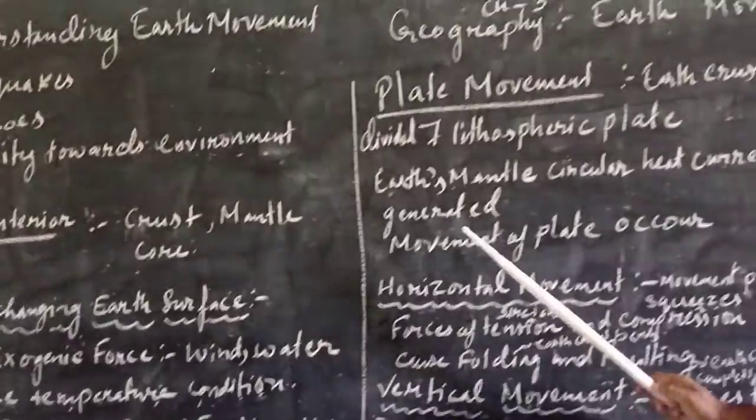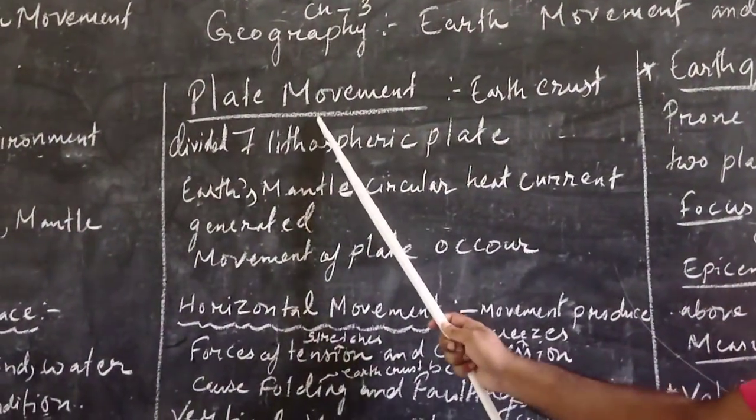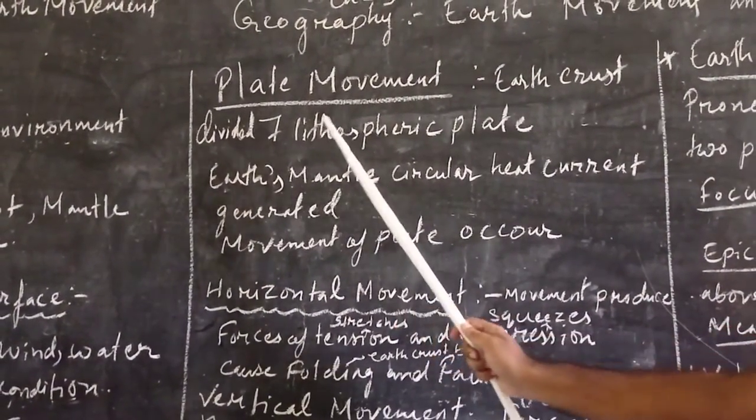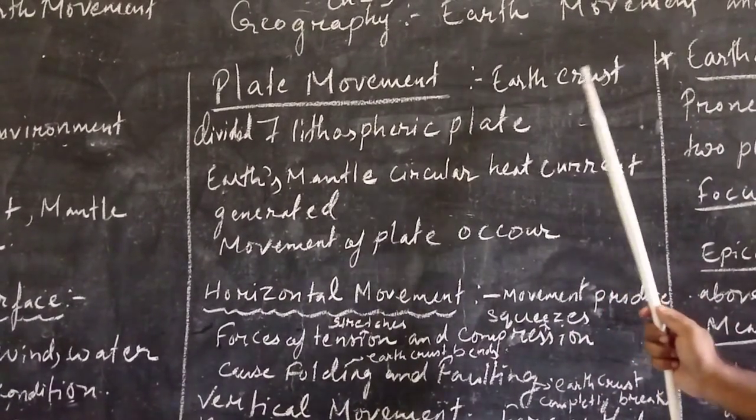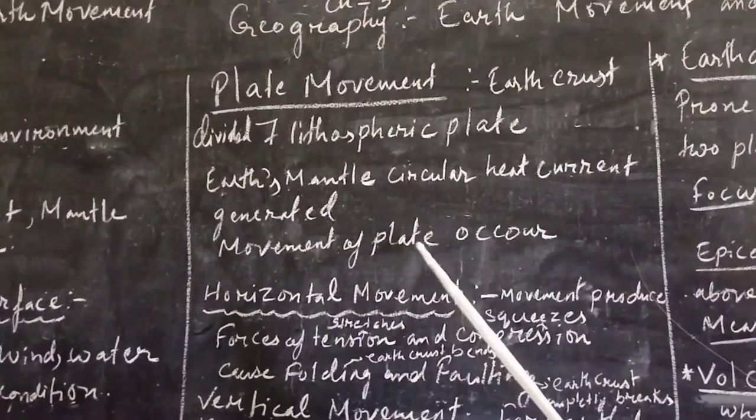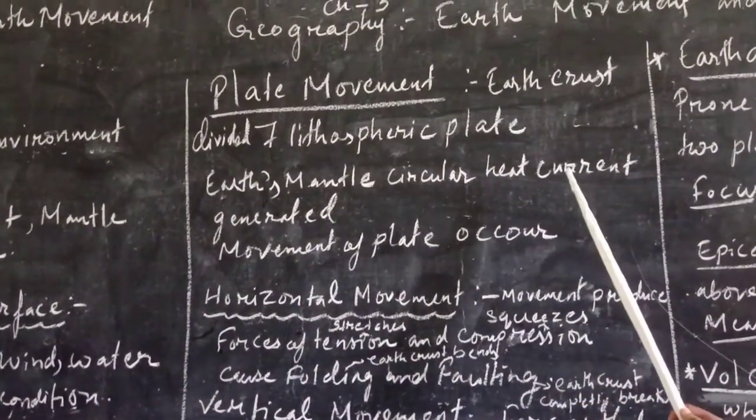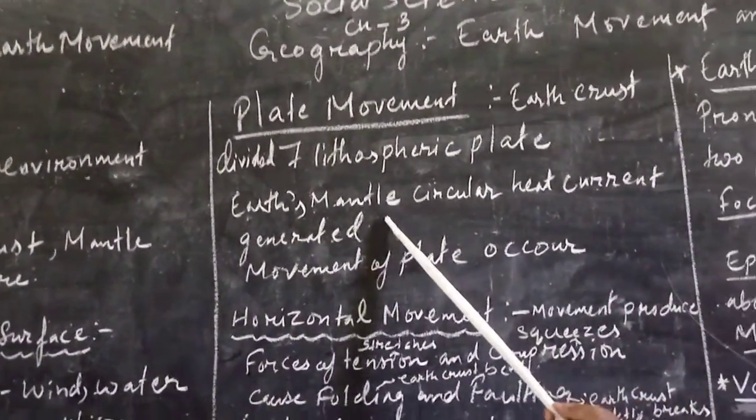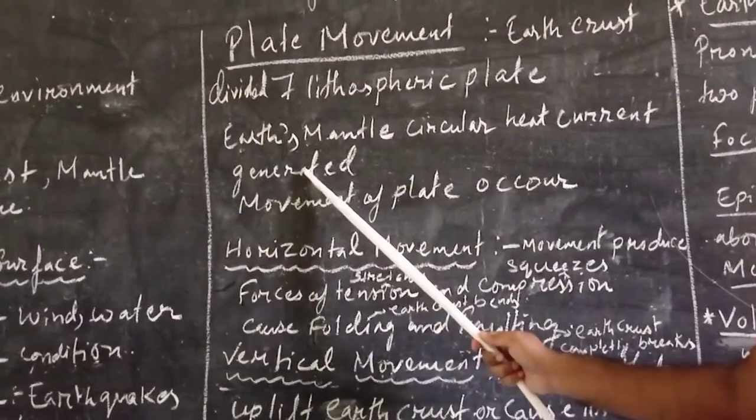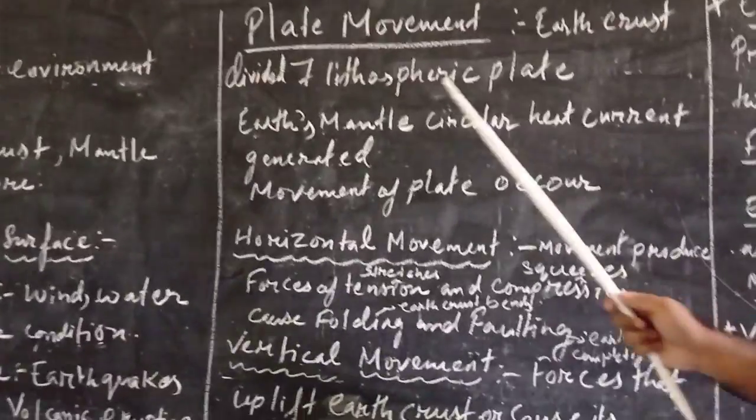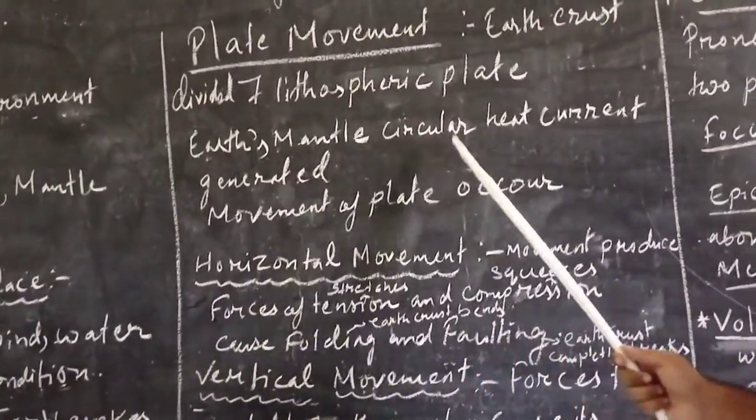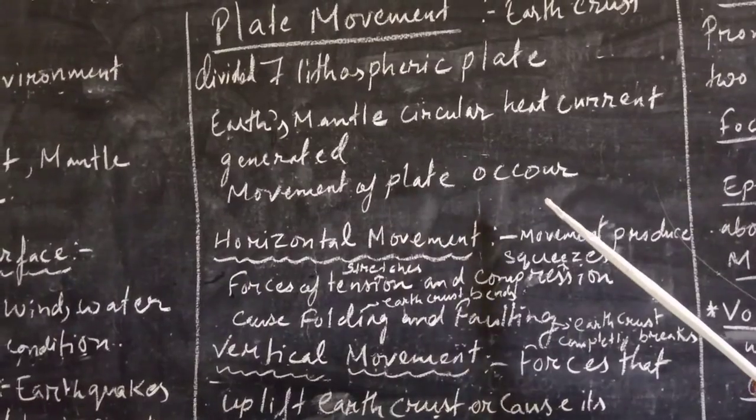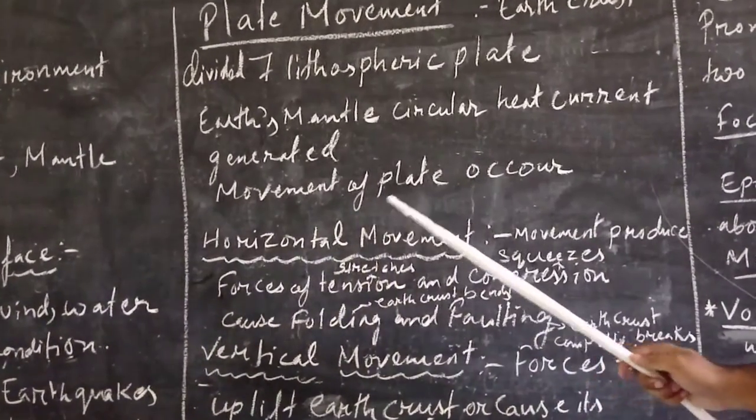Let us now look and go to the next topic, that is plate movement. According to the scientists, Earth's crust is divided into seven lithospheric plates. And due to Earth's mantle circular heat, heat circulates in Earth's mantle. And so, current is generated. Mantle is the part of Earth's interior. So heat is generated, and due to heat generation, movement of plate occurs inside the Earth's interior.